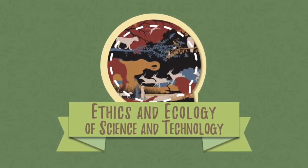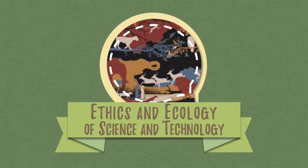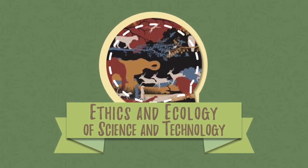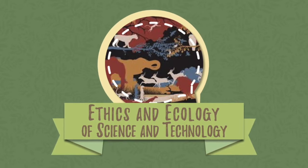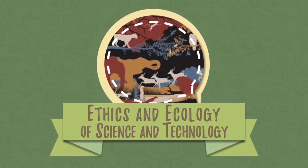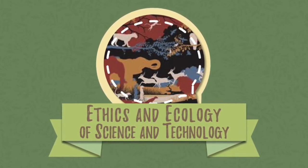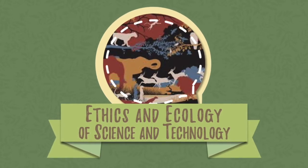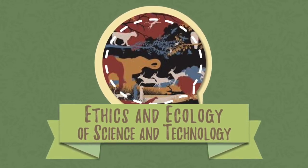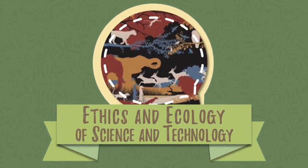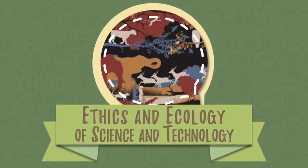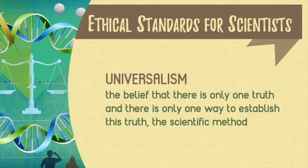Just like any type of profession or social role, scientists, technologists, and academicians have ethical standards. Ethical standards are guidelines for how certain professionals should behave in society when performing their roles, in order for us to know whether their action is good, bad, appropriate, or acceptable. There are four ethical standards for scientists that are common across all disciplines.